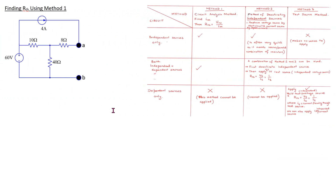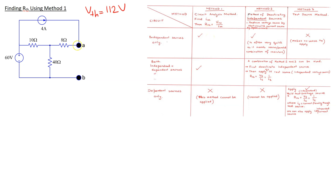After finding V_Thevenin, we need to find R_Thevenin. Since the given circuit has independent sources only, we can use either circuit analysis or the method of deactivating independent sources. Using the circuit analysis method, we have V_Thevenin as 112 volts. To find R_Thevenin we short circuit the terminals of interest, find the short circuit current, and then R_Thevenin equals V_Thevenin over I_short_circuit.